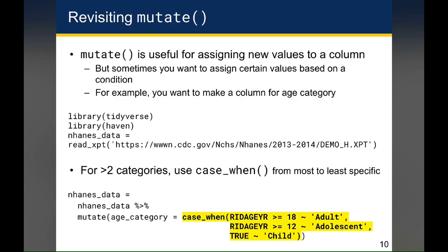The way to read this is: age category should be checked for its values. When age is greater than or equal to 18, assign the character adult to the age category. When age is greater than or equal to 12, assign adolescent to the age category. And when none of the above conditions are true, we use the value true as the last condition, so it'll always fire — assign child.